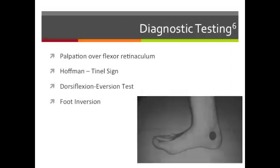Some helpful tests you may want to consider during your exam include palpation over the flexor retinaculum, which would produce or increase symptoms. Tinel's sign is performed by tapping over the depicted area, attempting to change or reproduce symptoms. The dorsiflexion eversion test and the inversion test may both increase symptoms. When dorsiflexing and everting the foot, you're putting tension on the nerve, and when inverting the foot, you're decreasing the volume of the tarsal tunnel, both of which could reproduce pain or increase symptoms.